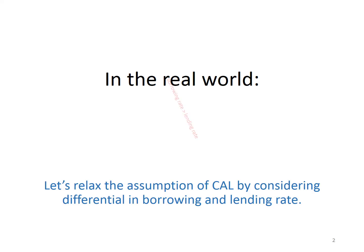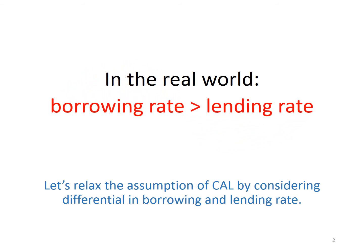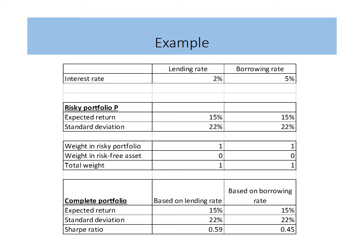In the real world, borrowing rate is higher than lending rate. Let's relax the assumption of the capital allocation line by considering the differential in borrowing and lending rate. I will use an example to elaborate. In this example, the lending rate is 2% and the borrowing rate is 5%. A risky portfolio P has an expected return of 15% and standard deviation of 22%. We are going to form a complete portfolio by combining a risk-free asset with risky portfolio P.